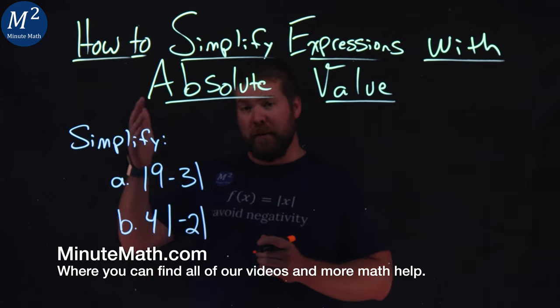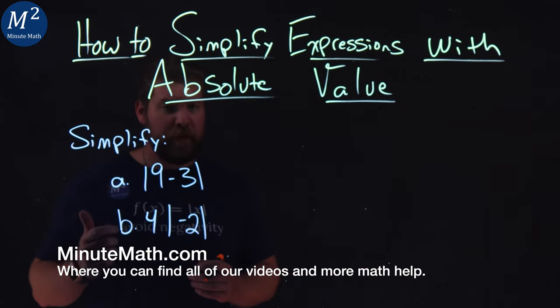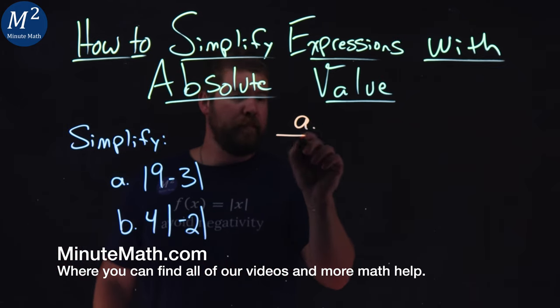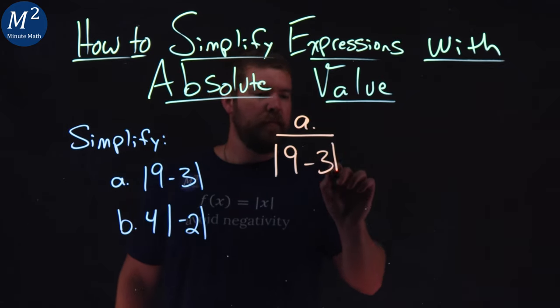We're given two expressions here that we need to simplify, A and B. Let's start with the first one, absolute value of 9 minus 3.